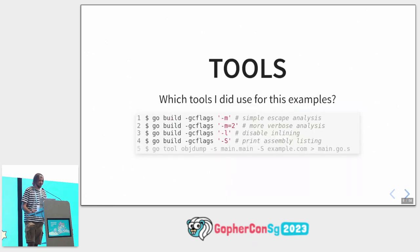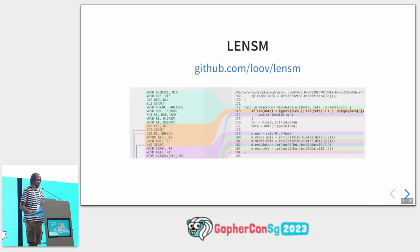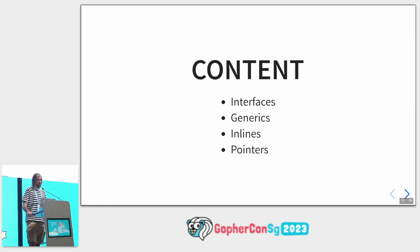And this is a list of tools I'm using. For example, to see different GC flags — like for escape analysis, for disabling inlining, and for getting assembly code from binary. I really like the Lensum tool to visualize assembly code and link it with source code. I really like it and recommend it. So the table of contents we will discuss today includes: interfaces, generics, inlines, and a few words about pointers.